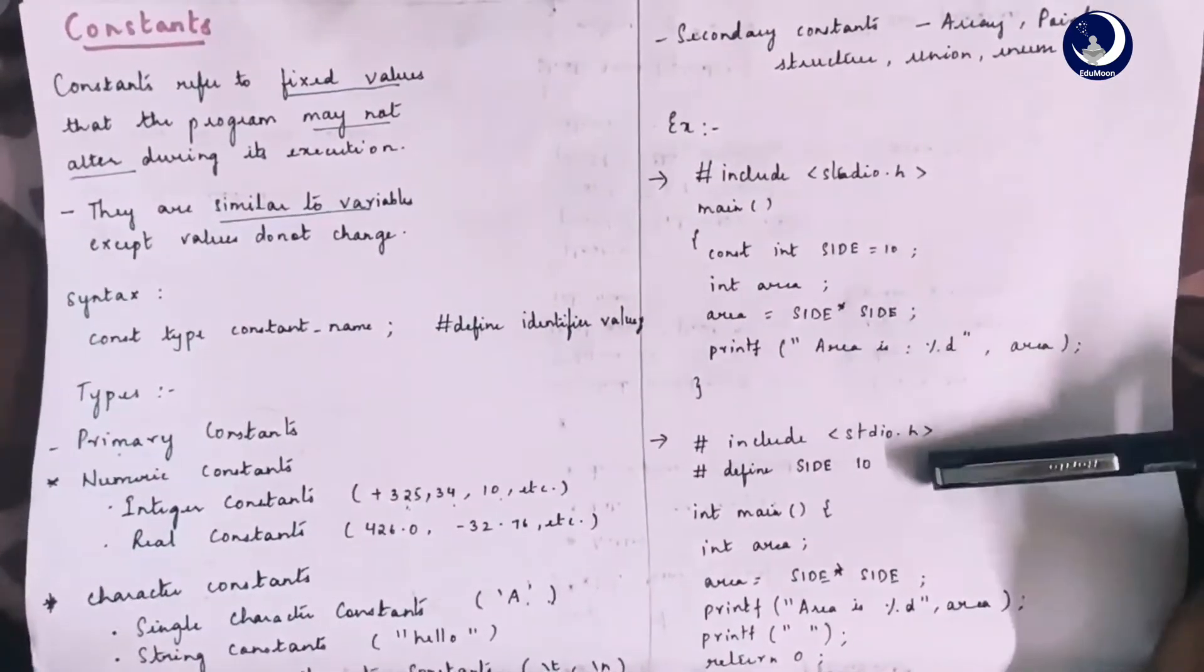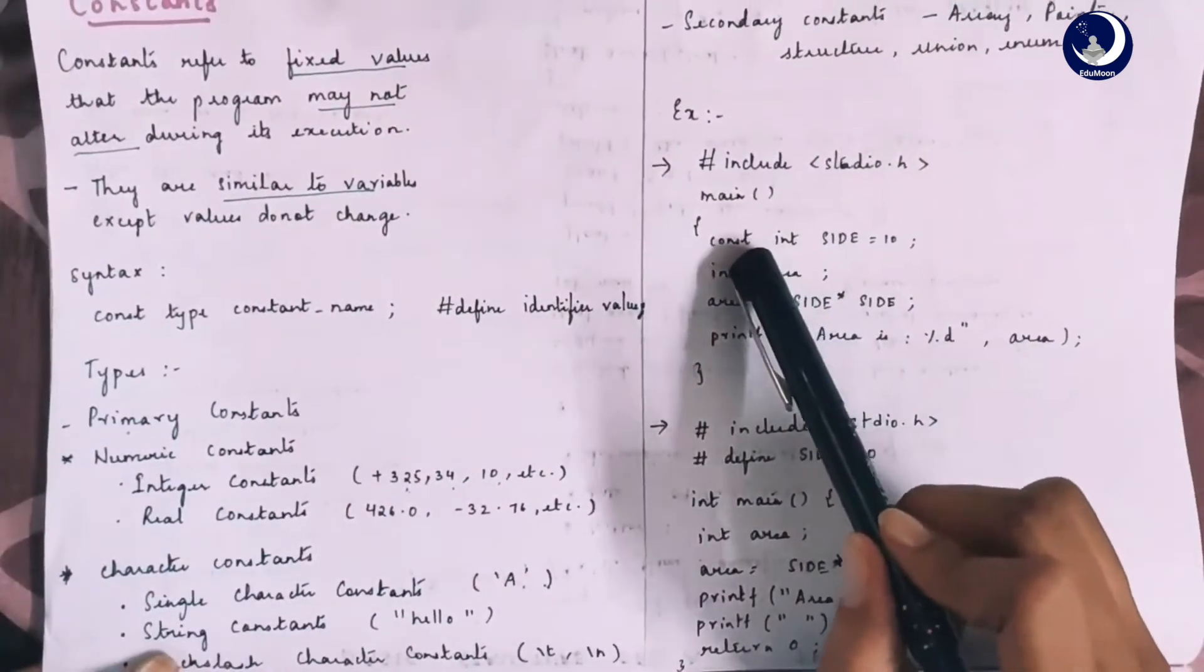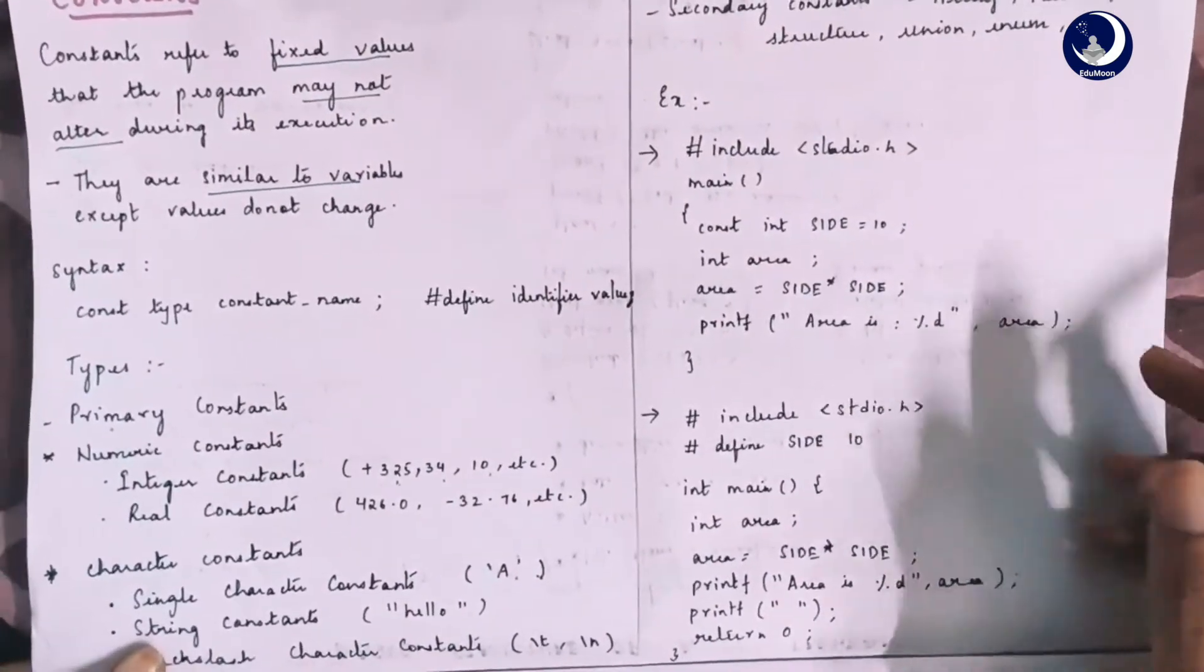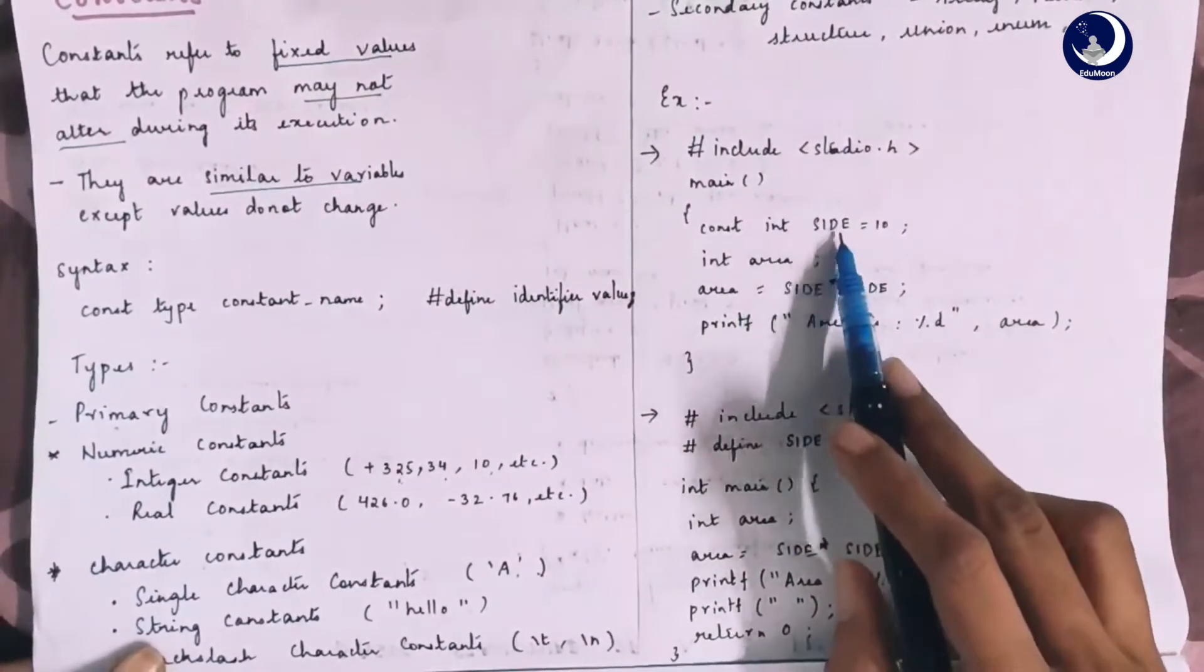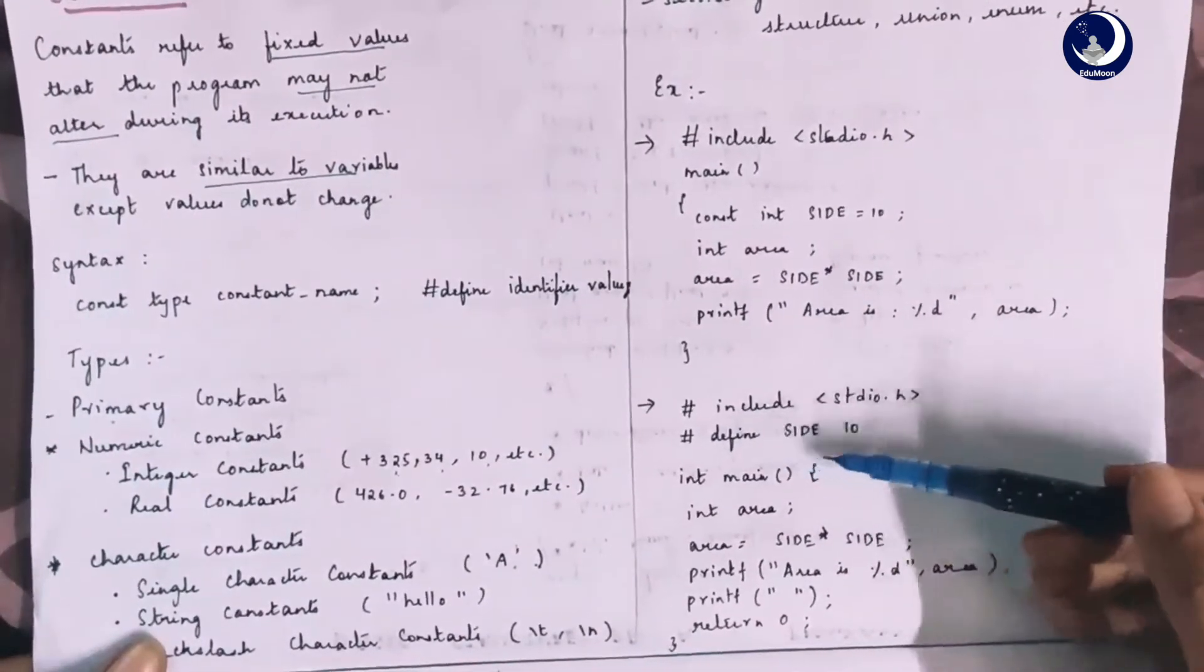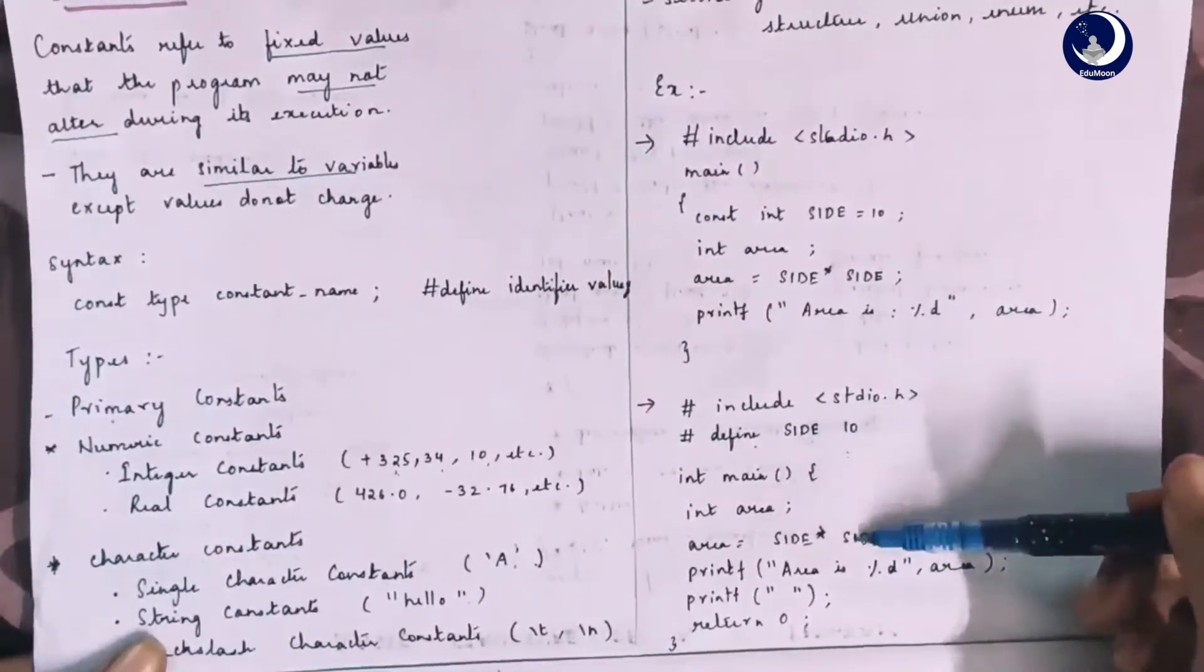Consider the below program. In this program, side is mentioned using the keyword constant. That is, its value is not going to change throughout the program and the area is calculated using the same constant. In the next program, we have side defined using the defined keyword and the area is calculated using the same value.